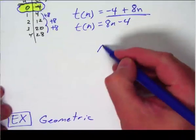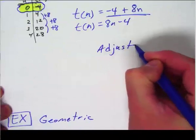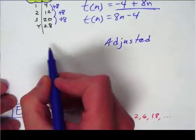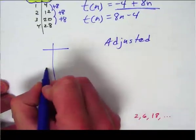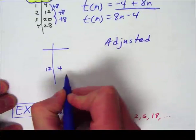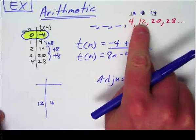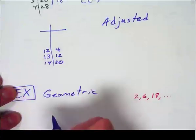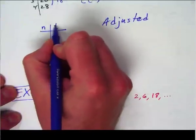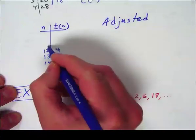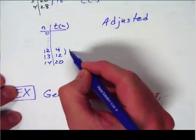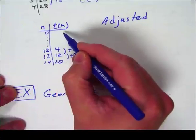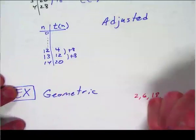So there is this thing called adjusted sequences, and adjusted sequences allow you to not start at term 1 or term 0, but adjust to anywhere. An adjusted sequence table would simply be: term 12 is 4, term 13 is 12, term 14 is 20, and so on. Most people would say I'd have to fill in my table all the way back to 0, subtracting 8 a whole bunch of times — 12 times, as a matter of fact — to get back to the 0 value. That's a waste of time.